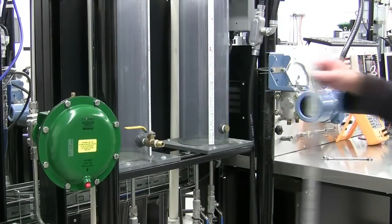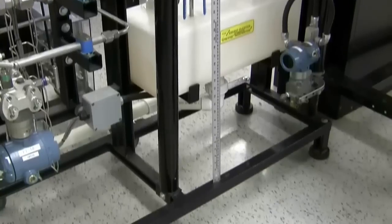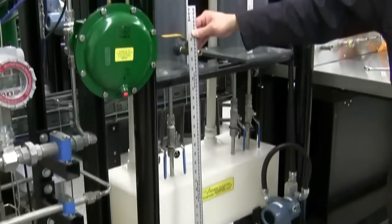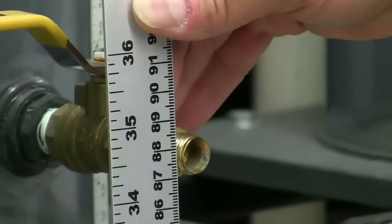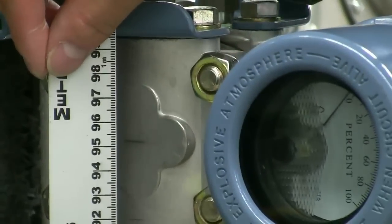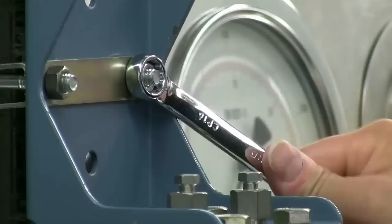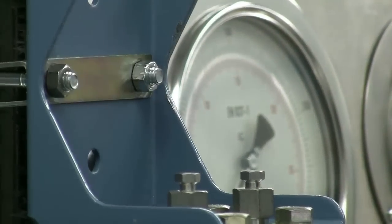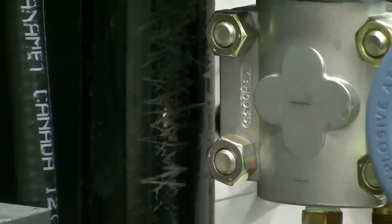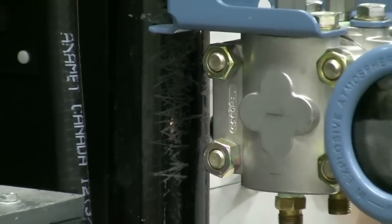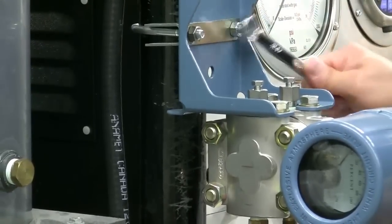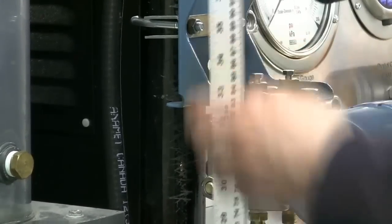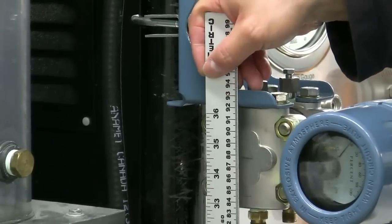The next step is to connect the level transmitter to the open tank. But first, we need to make sure that the transmitter is at the same elevation as the bottom tap. It's about 87.7 cm here, and the transmitter is about 895.3 cm. We need to lower the transmitter to about 87.7 cm.